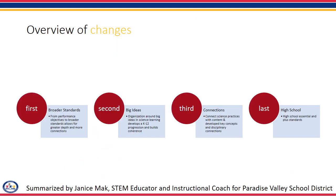Those were the five goals. We also have an overview of the changes. The first is broader standards and moving away from POs, with the goal of allowing teachers flexibility for greater depth and more connections in science content. The second big change is the big ideas of knowing science, developing a K-12 progression that allows students to develop science ideas and coherence that grows over time. Third is connecting science concepts and practices, with the standards developed with these connections in mind. Finally, in high school, there are high school essential and plus standards.